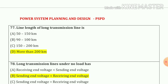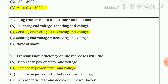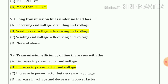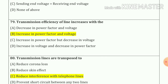Question number 77: line length of long transmission line is more than 200 kilometers — option number D. Question number 78: long transmission lines under no load have sending end voltage less than receiving end voltage — option number B.